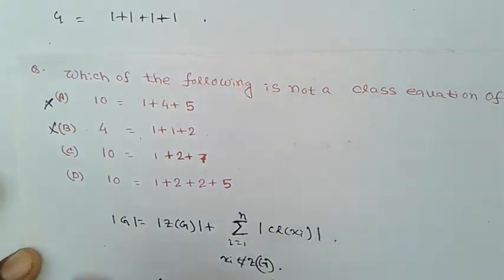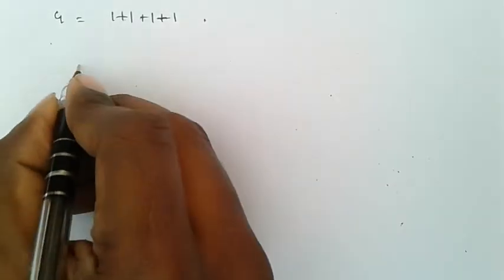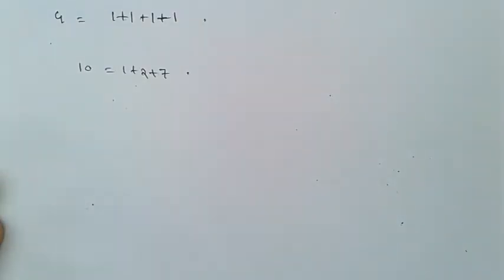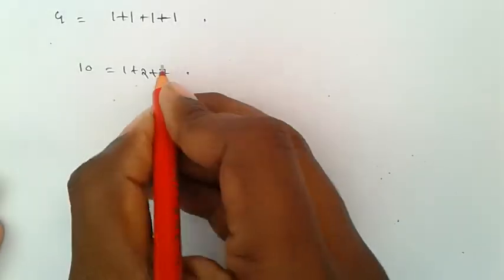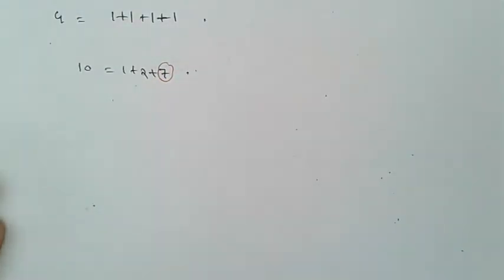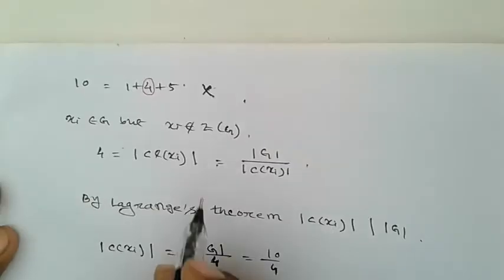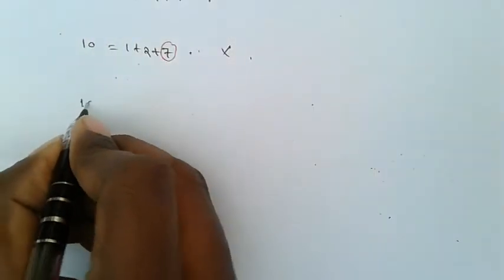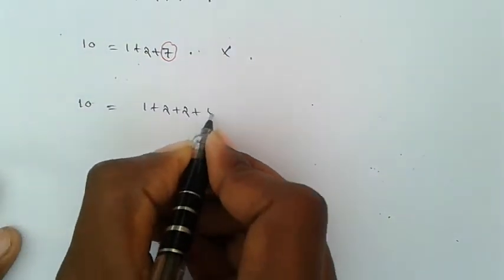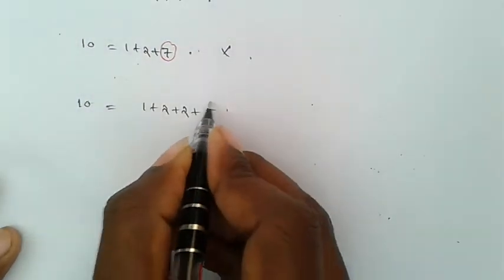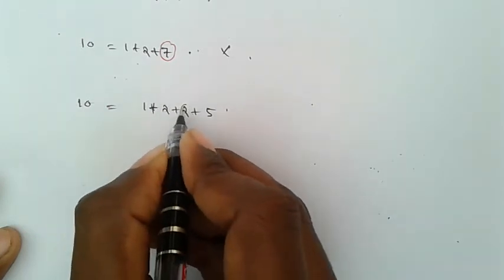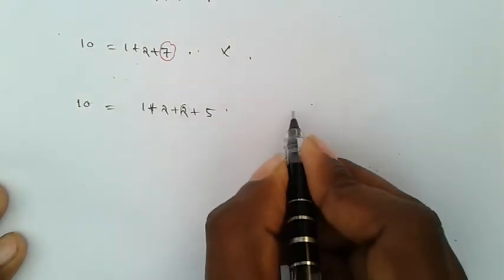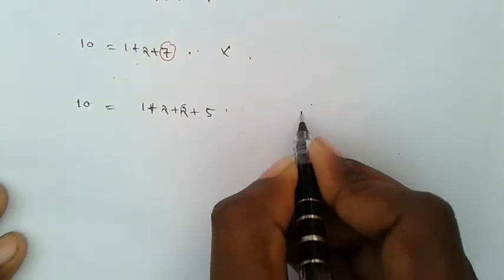The third option is 10 = 1 + 2 + 7. This is also not a class equation, because 7 is not a divisor of 10 — the same reasoning as the first case applies. The fourth option is 10 = 1 + 2 + 2 + 5. Here, every term (1, 2, 2, 5) is a divisor of 10, so this candidate passes the divisibility condition.